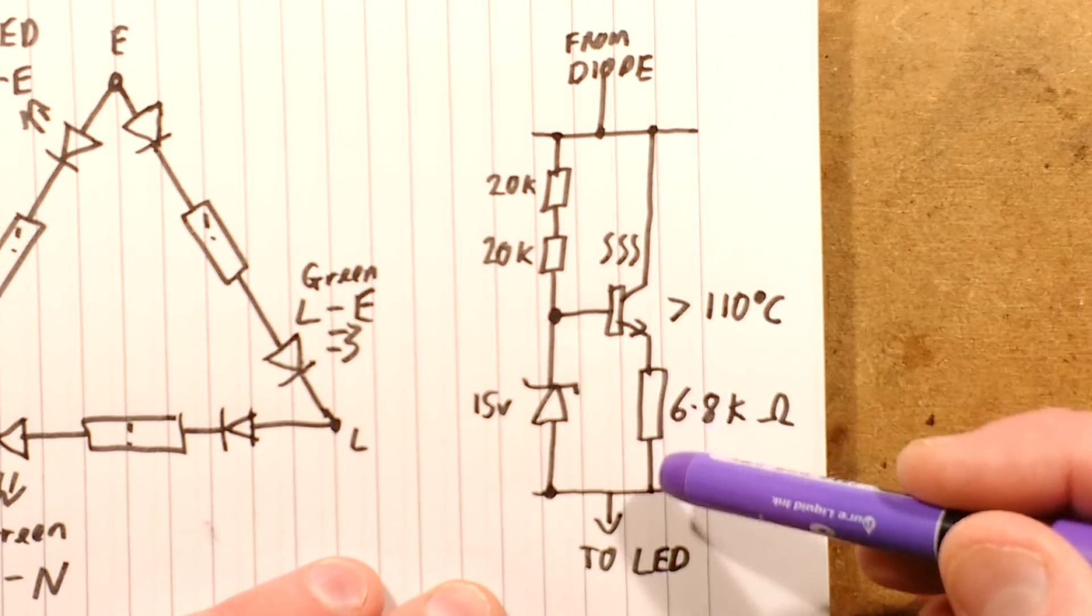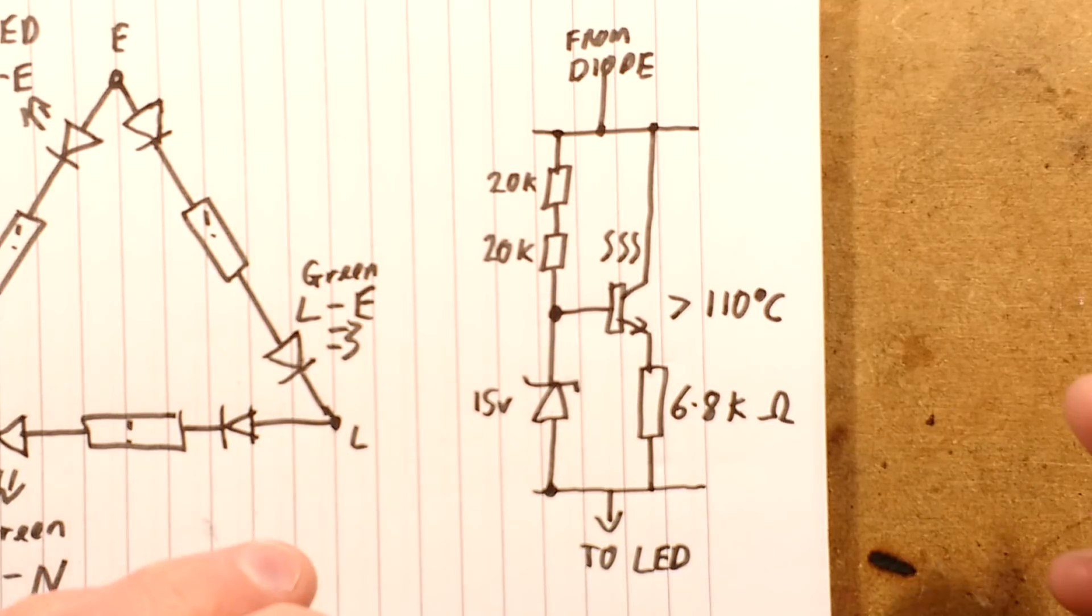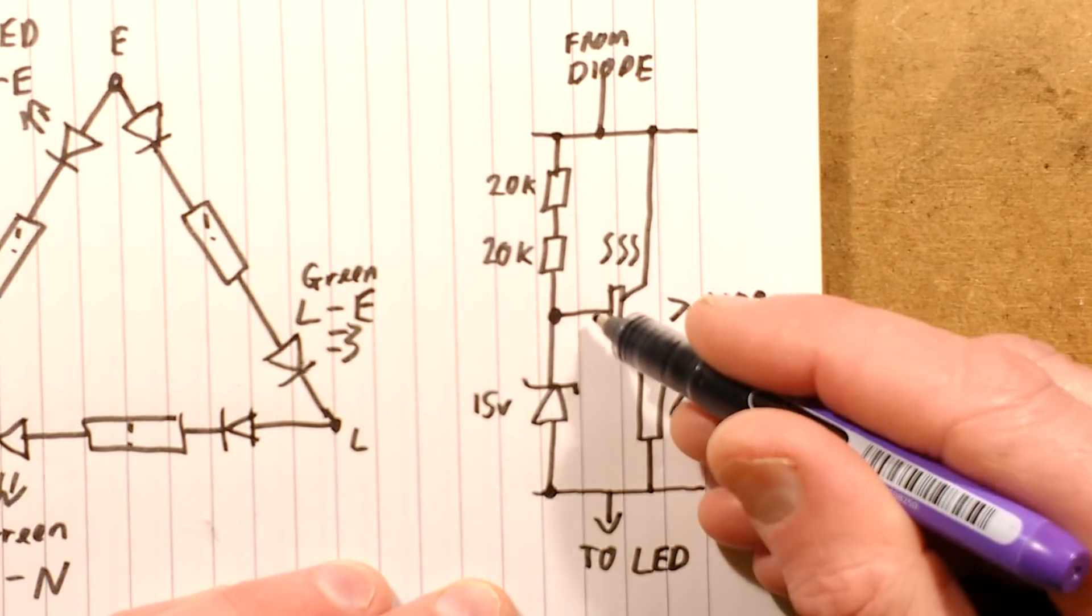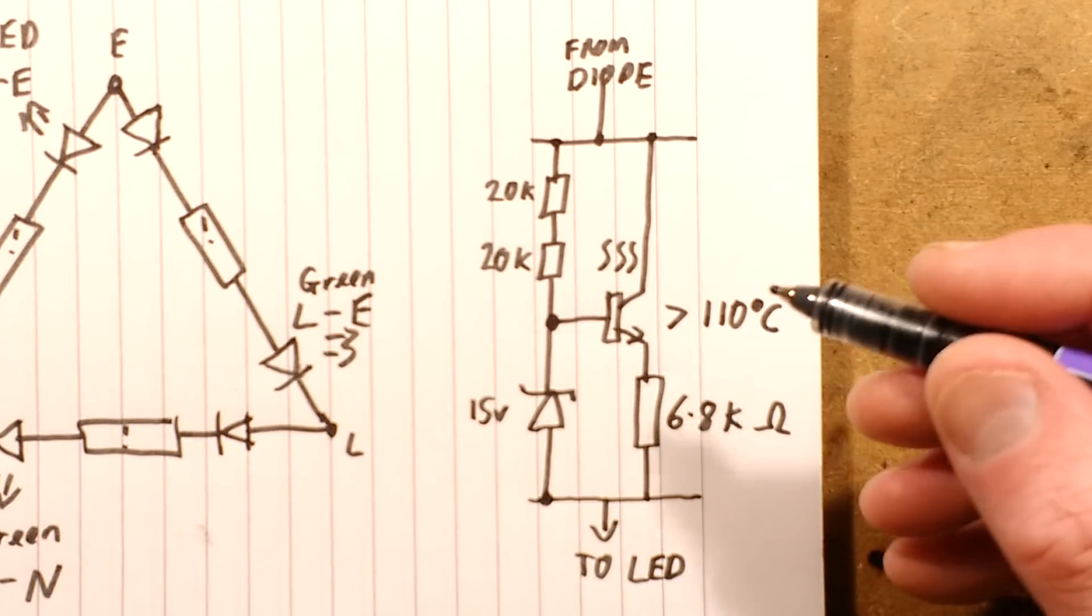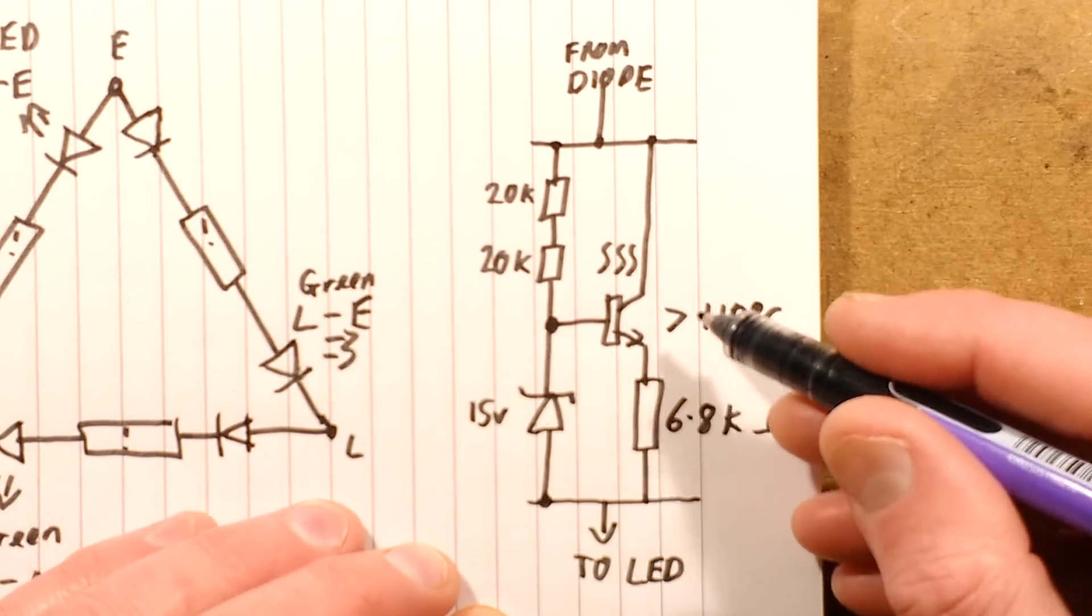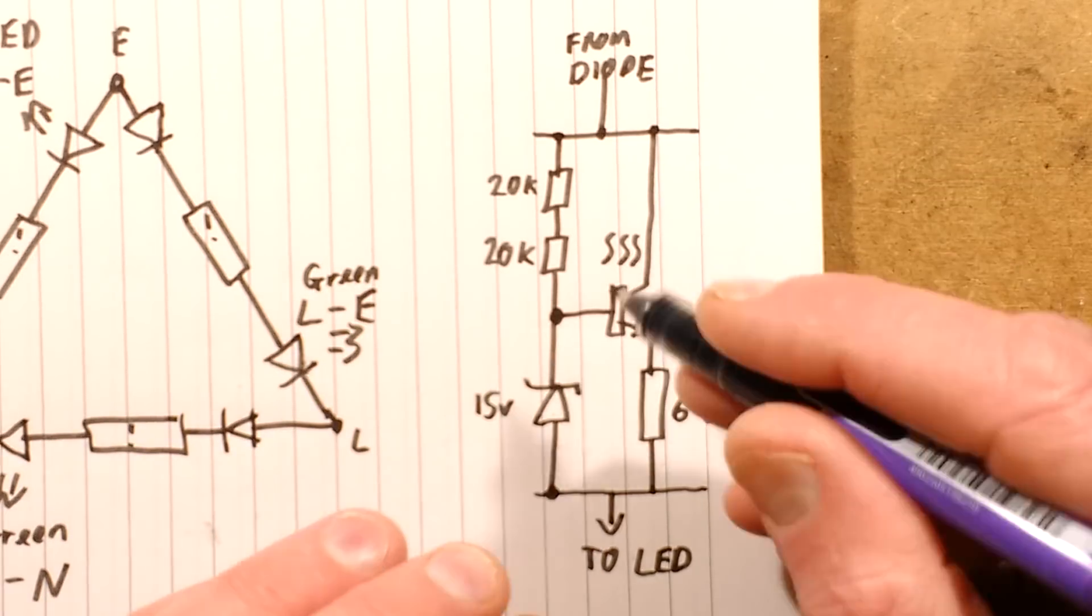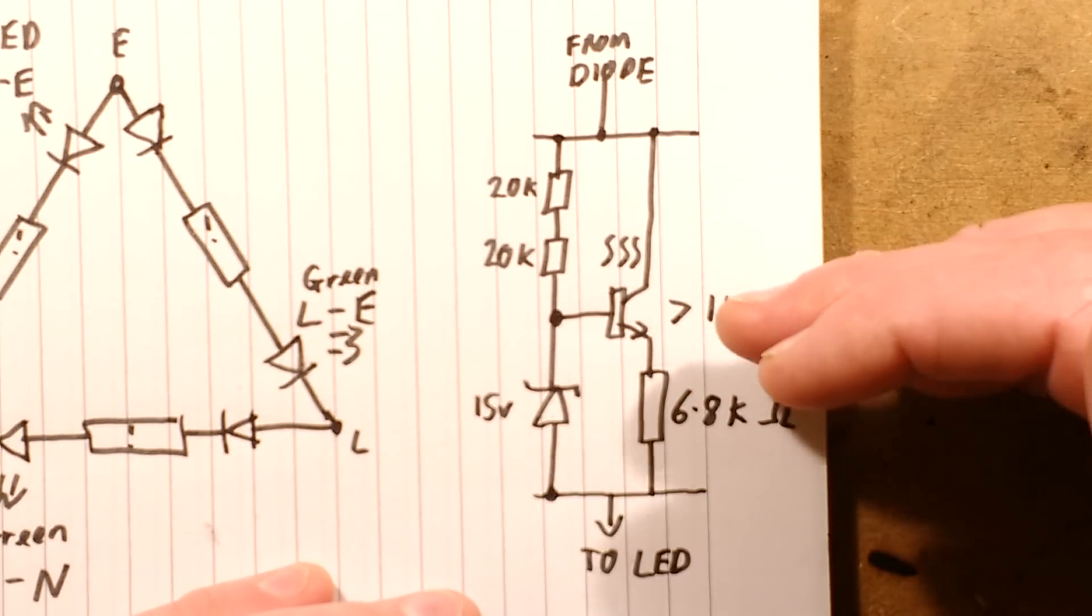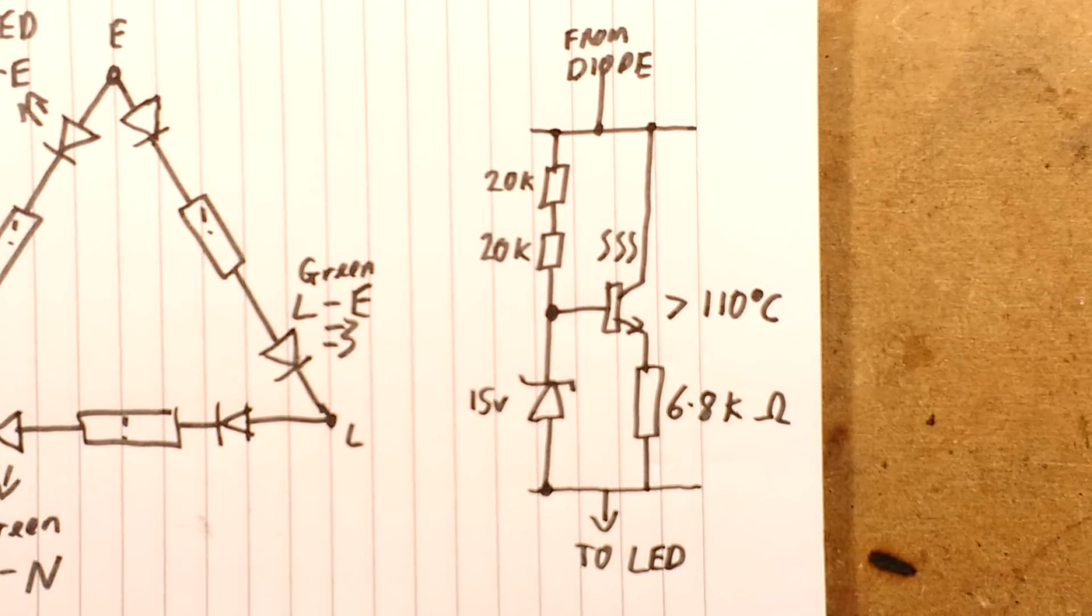Once the voltage reaches the 15 volts minus the 0.6 volts required - say about 14 volts - the transistor will start turning off. That's the point it will rock in its linear region, between fully on and fully off. It will turn into basically a resistor, which it certainly does. It gets very hot.